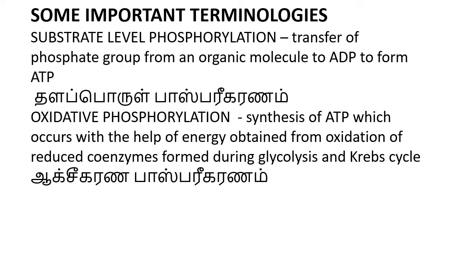When phosphorylation occurs, AMP (adenosine monophosphate) gains a phosphate group to become adenosine diphosphate (ADP), and ADP gains another phosphate group to become adenosine triphosphate (ATP). In substrate level phosphorylation, a substrate is a high energy compound which contains phosphate molecules, and this phosphate is liberated from the substrate to phosphorylate an ADP molecule to form ATP. This is called substrate level phosphorylation — the transfer of a phosphate group from an organic molecule to ADP to form ATP.